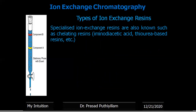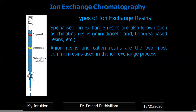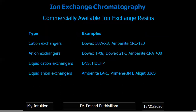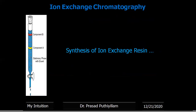Specialized ion exchange resins, called chelating resins, include examples like aminodiacetic acid and thiourea-based resins. These are not classified under the other four categories and will be explained in a separate class series. The most commonly used resins are anion exchange resins, which attract negatively charged ions, and cation exchange resins, which attract positively charged ions. Commercially available examples of solid cation exchangers, solid anion exchangers, and liquid cation and anion exchangers are also provided.